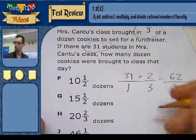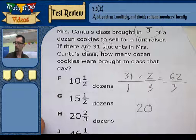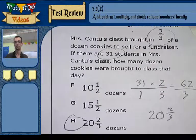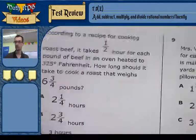3 divides into 62 how many times? Well, 3 times 20 is 60, and that leaves me over with two leftovers. So 20 and 2 thirds, which is choice H.